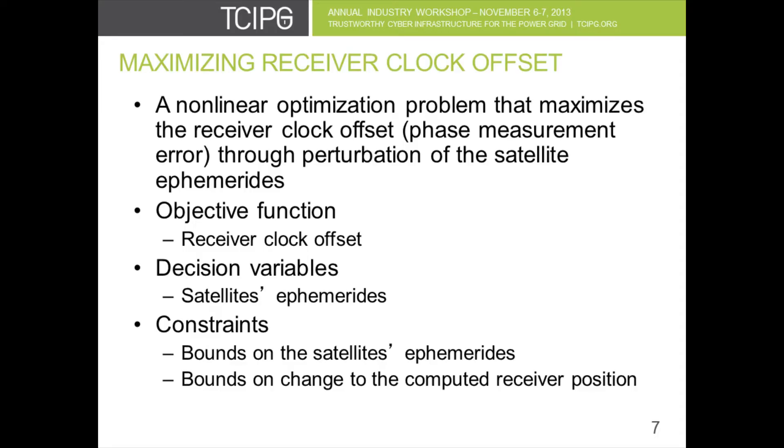Alright, so Tom just showed us an example of data level spoofing. I will explain how we actually get the data manipulation done so that we introduce the maximum amount of phase measurement offset. Basically, we formulate the problem as an optimization problem where we maximize the objective function, which is the receiver clock offset. The receiver clock offset is linearly related to the PMU's phase error, so therefore when we maximize the receiver clock offset, we maximize the PMU phase measurement error.